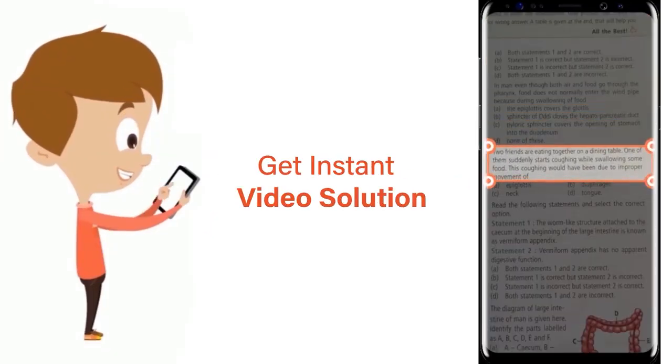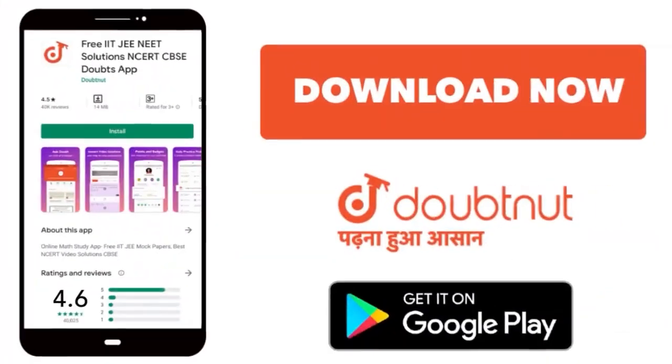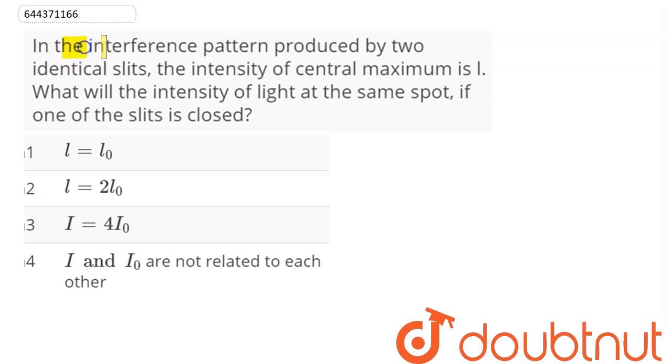Download Doubtnut app today. The question is: In the interference pattern produced by two identical slits, the central maximum is I. What will be the intensity of light at the same spot if one of the slits is closed?